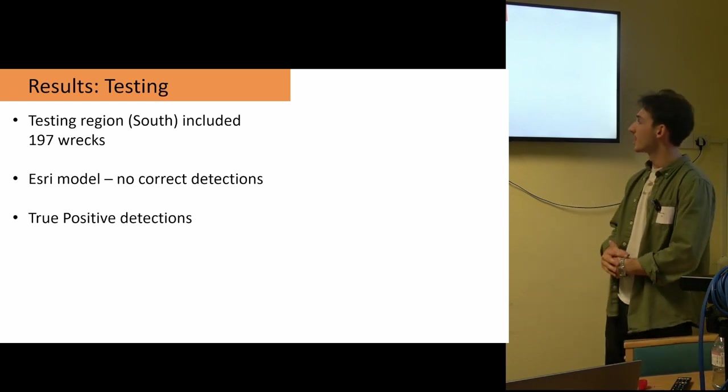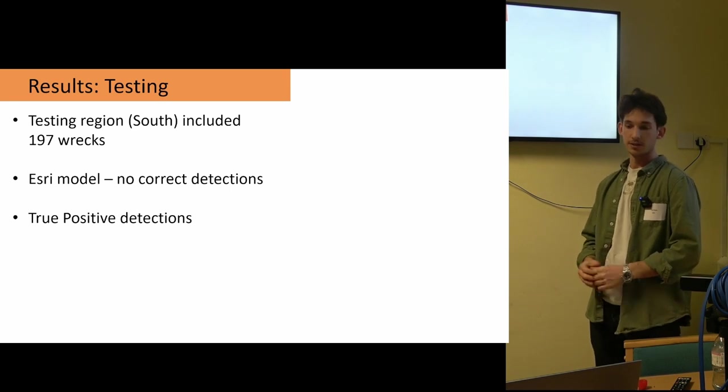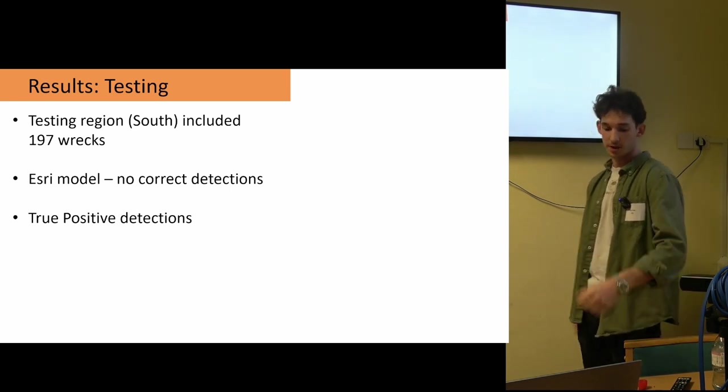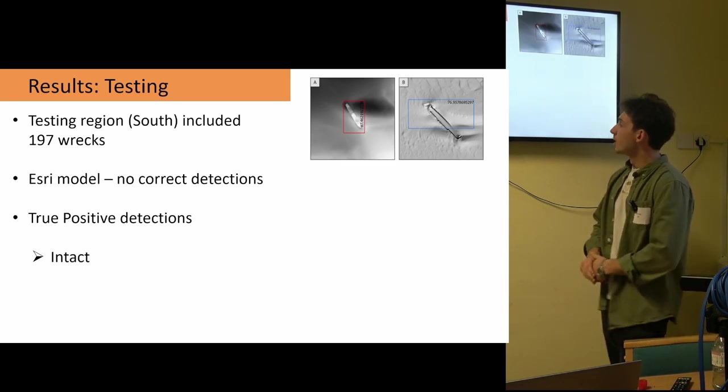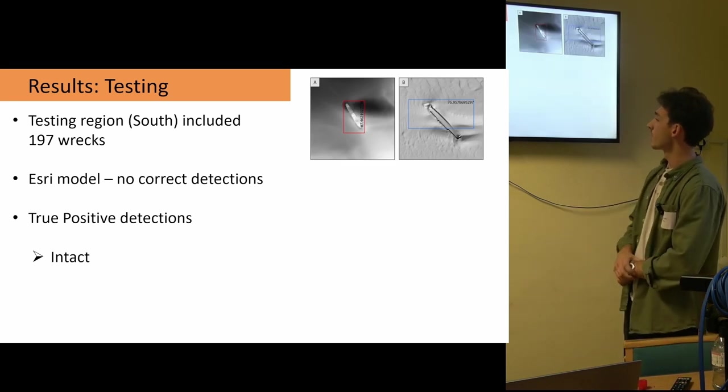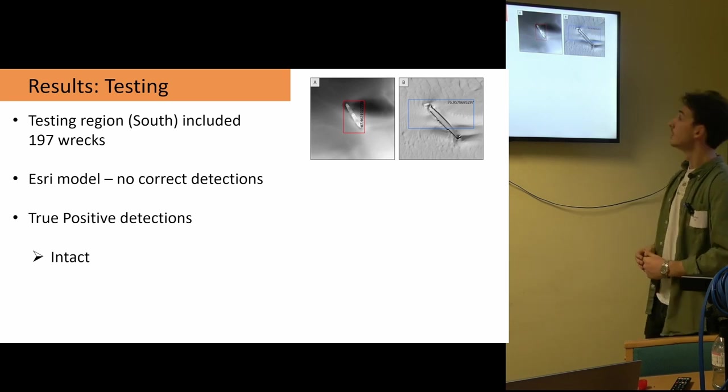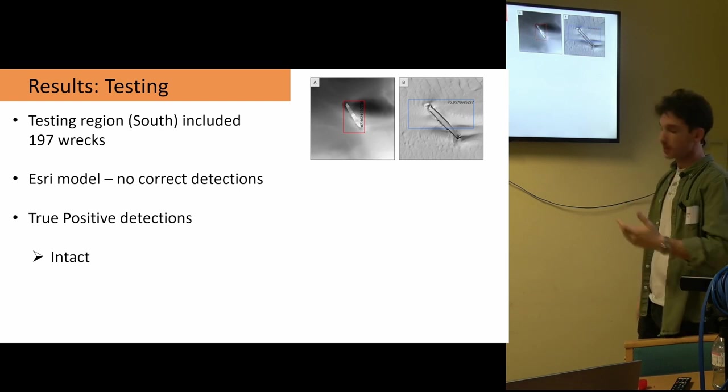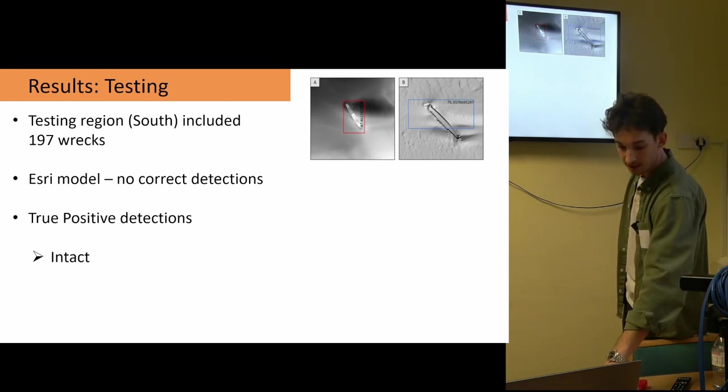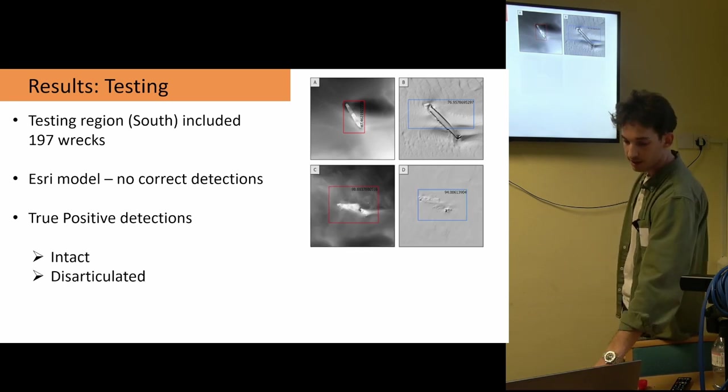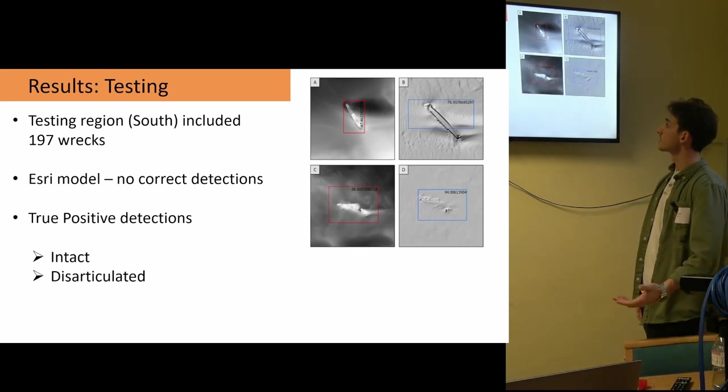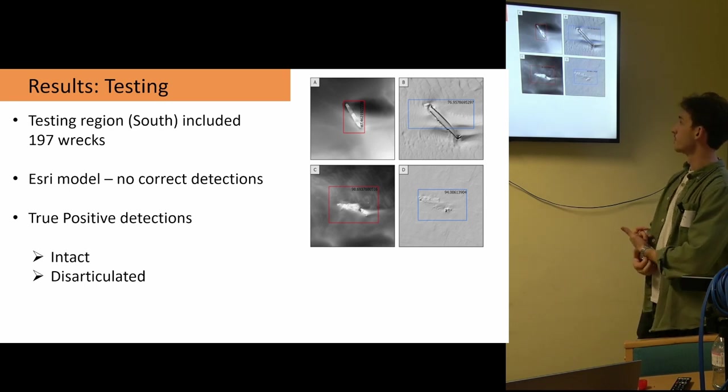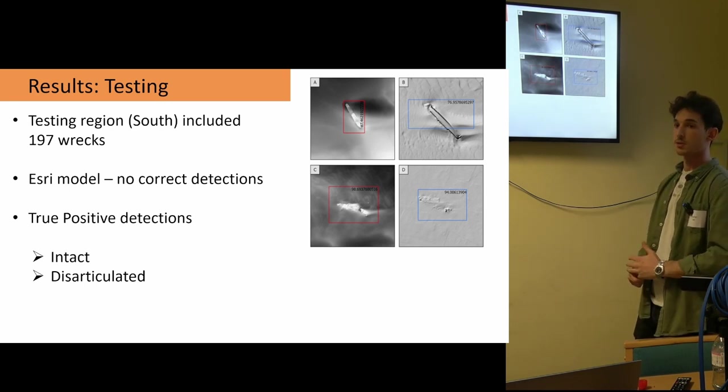So the first things that I was looking at were the true positive detections. That is where the machine learning models are accurately detecting the shipwrecks on the seabed. And here's an example of intact, well-preserved wrecks being detected by the models. Hope you can see that at the back. On the left-hand side, we have the detection model using the bathymetry. On the right, we have the hillshade with the confidence score in the boxes there. So really nicely intact shipwrecks being detected. Interestingly, though, we're also being able to detect disarticulated wrecks, which is really exciting to see. Much less visually prominent. But both models are able to detect these types of wrecks as well, which is really great to see.